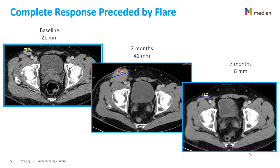Here is a visual of a complete response preceded by flare. After two months, the tumor measures 41 mm, a growth compared to 21 mm at baseline. The immune system creates this inflammation, seen as a pseudo-expansion of the tumor at two months. But we see at seven months, it has shrunk to 8 mm for a complete response.